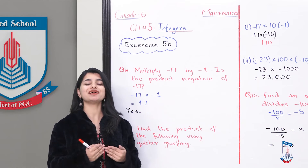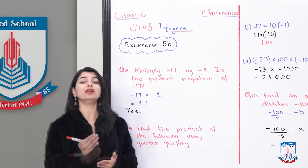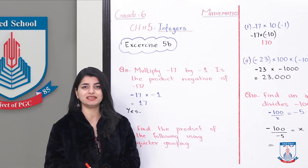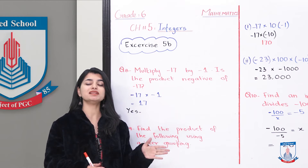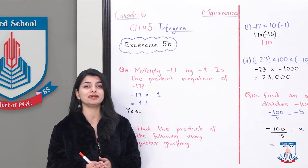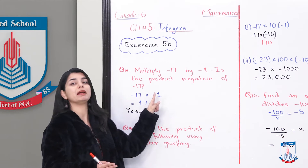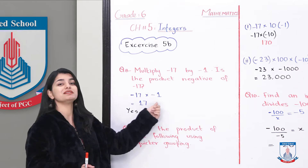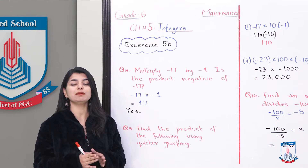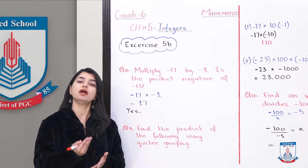First, let's understand that minus 17 is negative. The negative of minus 17 would be its inverse. Its inverse would be positive 17. So you will see: when you multiply minus 17 by minus 1, both signs are the same. When like signs are multiplied, the answer is positive.